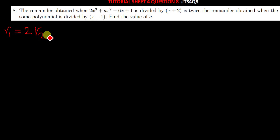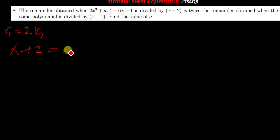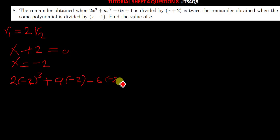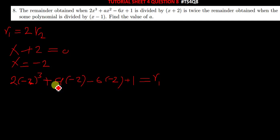To find r1, we need to find r2 and then multiply it by 2, and then find the value of a. When we equate x plus 2 to 0, we get x equal to negative 2. So when we put negative 2 in for x, we get: 2 times negative 2 to the power 3, plus a times negative 2 squared, minus 6 times negative 2, plus 1. This gives us r1.